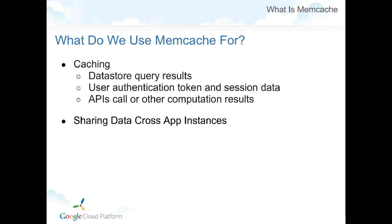In general, there are two major use cases for Memcache. The first is caching — for example, you can cache datastore query results, user authentication tokens, session data, URL-fetched page content, or other computational results. The second use case is to share data across different application instances. One typical example is an application-level counter. Because multiple instances access the same counter, you have to pay attention to race conditions. Fortunately, Memcache provides a mechanism to implement the counter very easily.